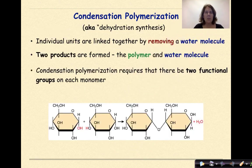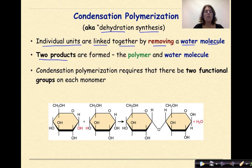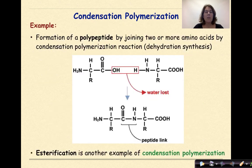Let's talk about condensation polymerization, also known as dehydration synthesis, where individual units are linked together by removing a water molecule. Two products are formed: the polymer and a water molecule. Condensation polymerization requires that there be two functional groups in each monomer. An example of this is the formation of a polypeptide by joining two or more amino acids by a condensation polymerization reaction, as seen below.